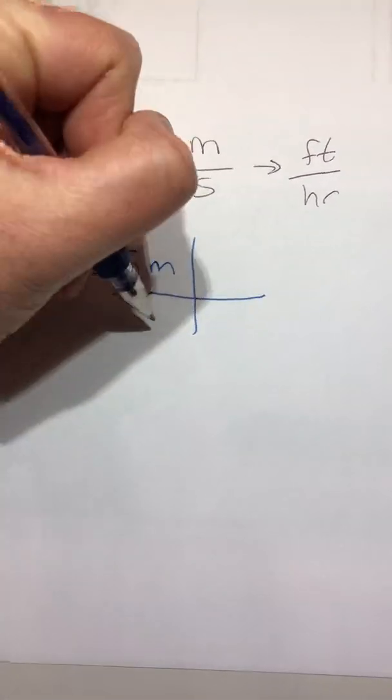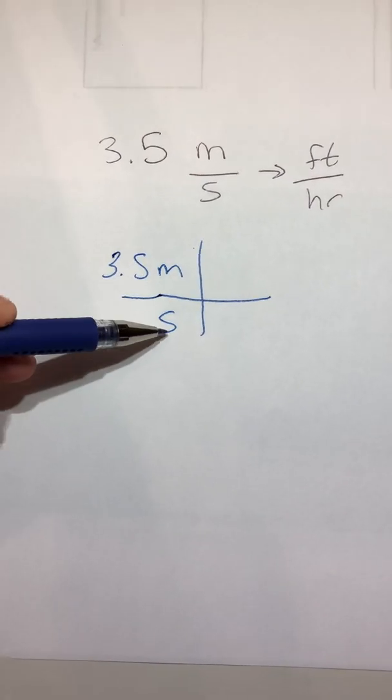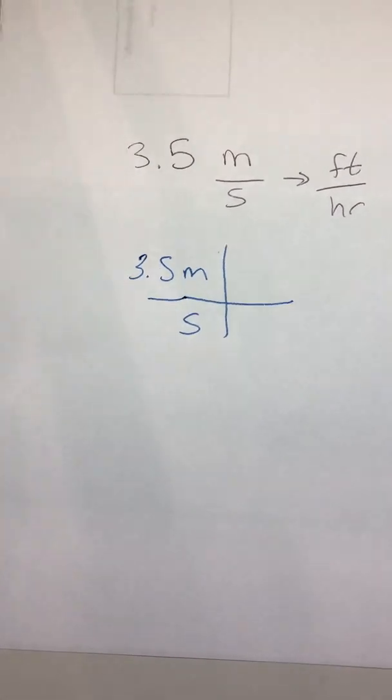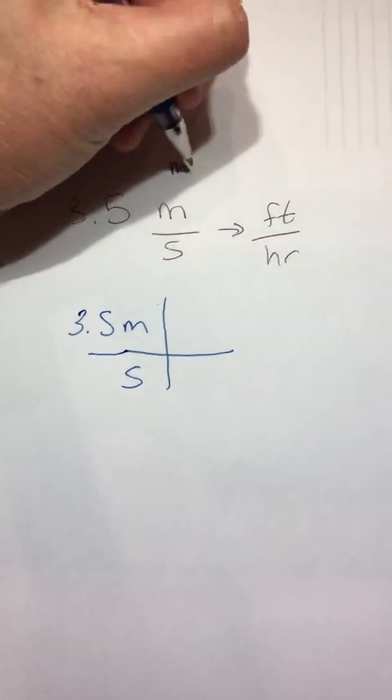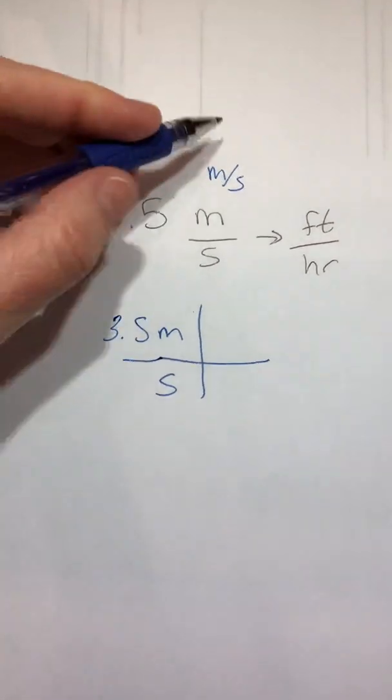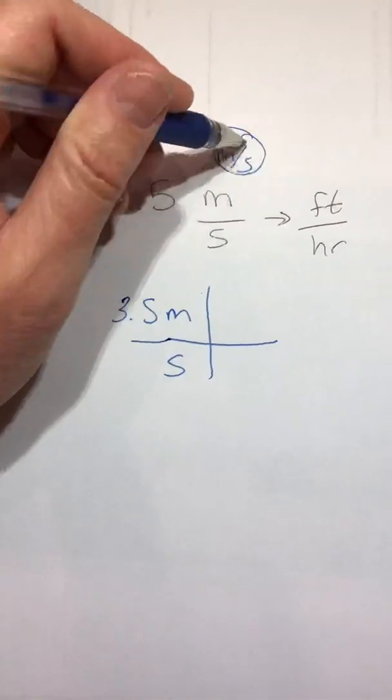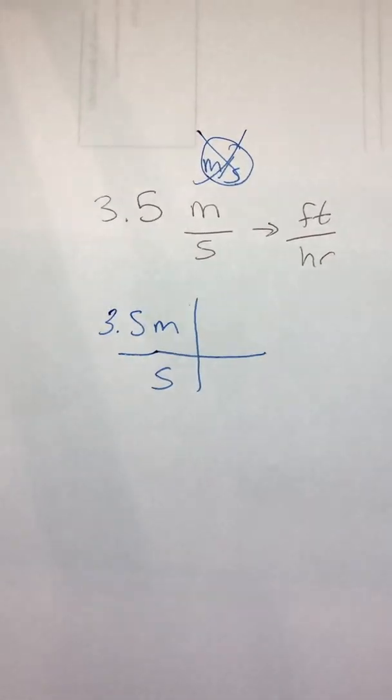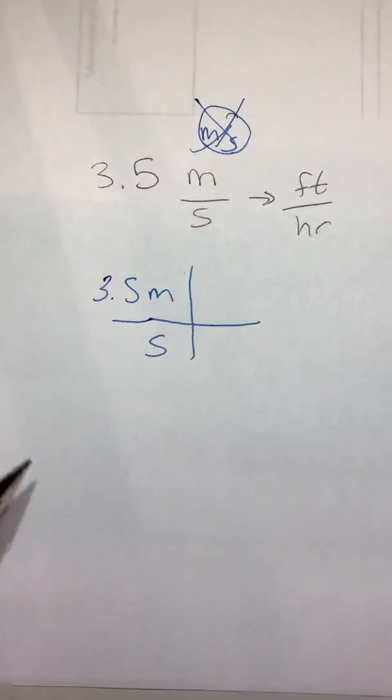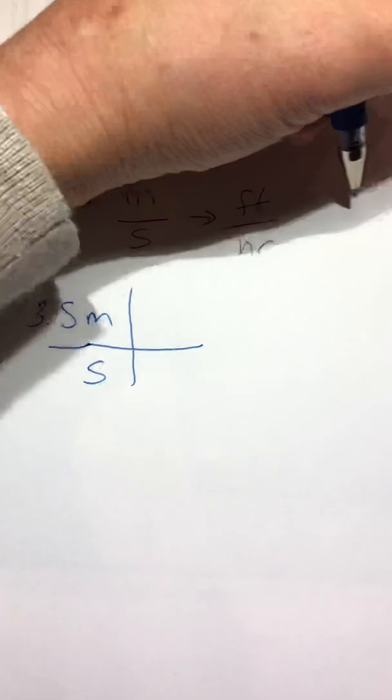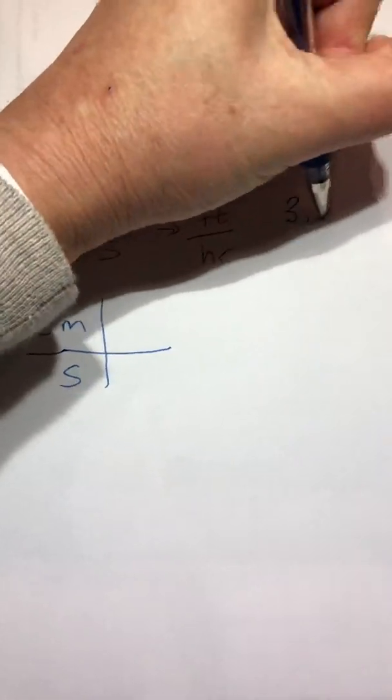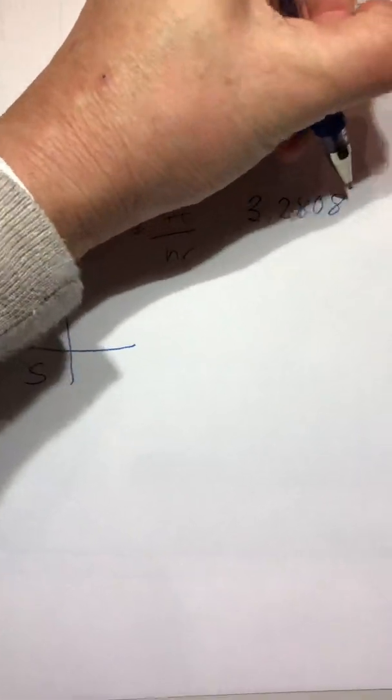So we're going to start with 3.5 meters per second, again putting each unit in a box, its own separate box, never together. If you wrote meters per second like that, it makes it more difficult to see. So you always want to try to put the horizontal line like this. So now we've got meters, we need to change it into feet. A conversion that would be given to us is that there are 3.28084 feet per meter.